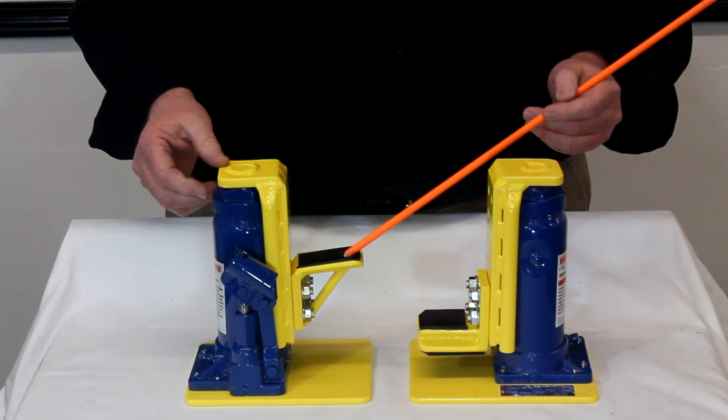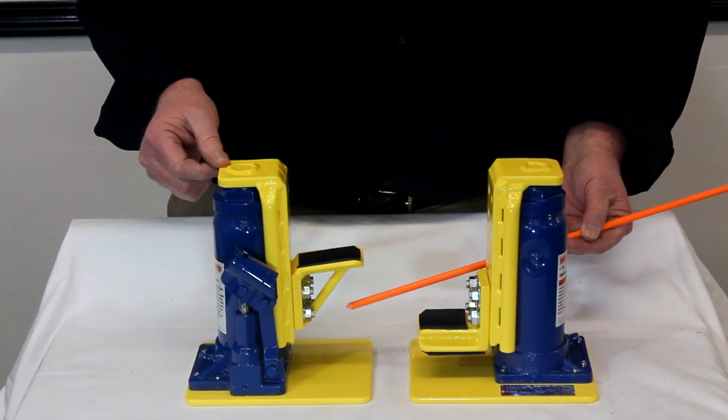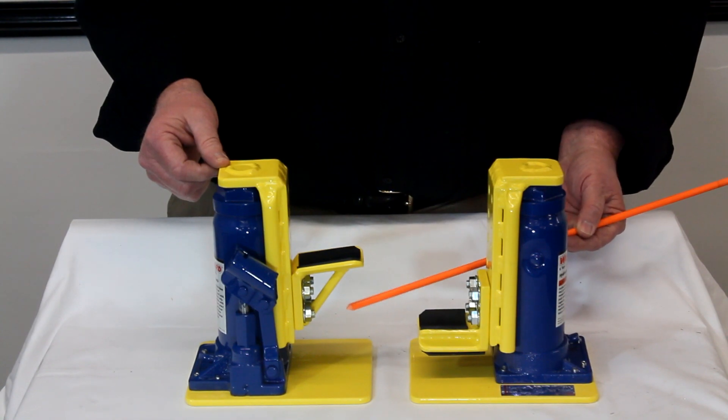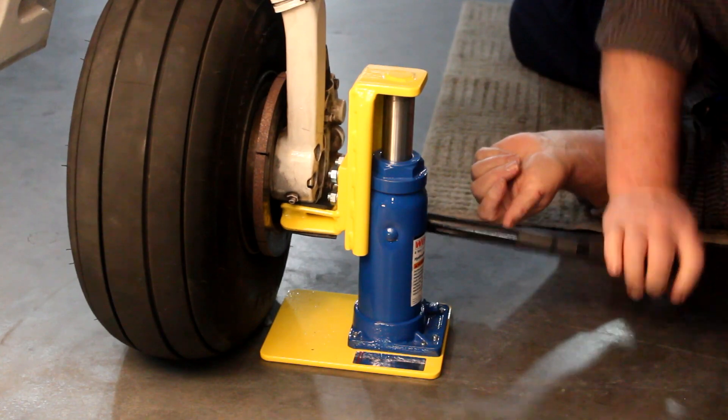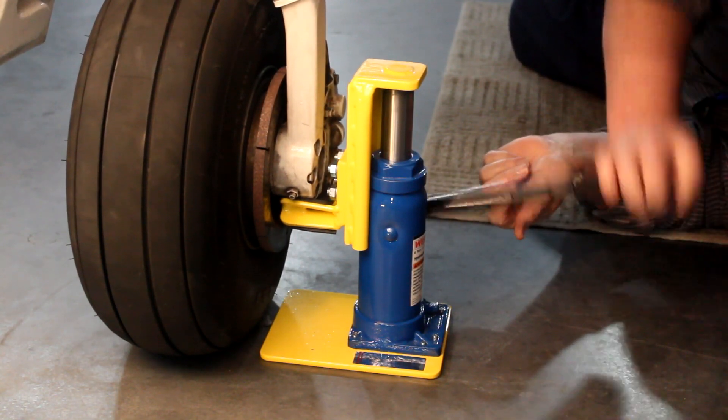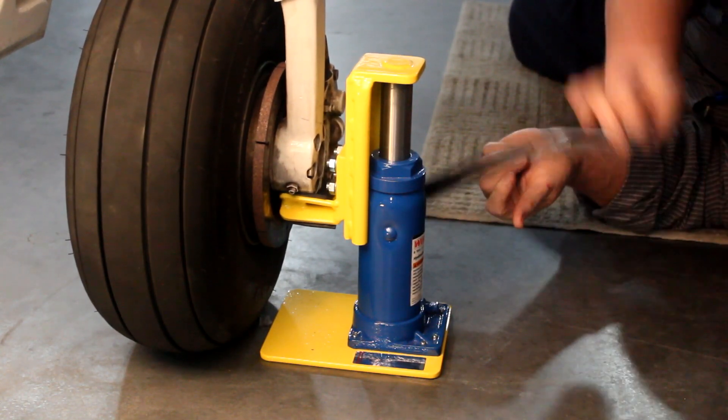The problem came when we had a customer who requested the shelf be able to start lower to pick up the plane when the tire was completely flat and it was on the rim. So we redesigned the shelf to this configuration.